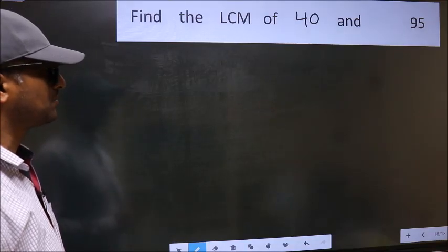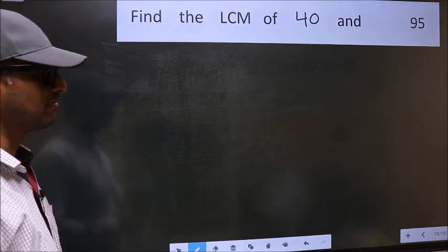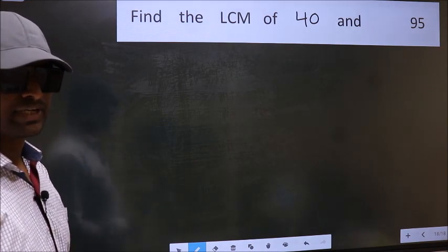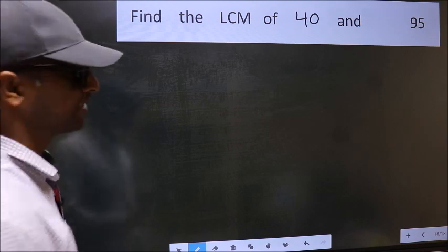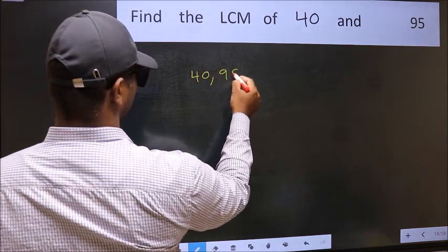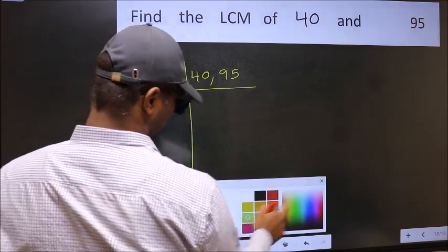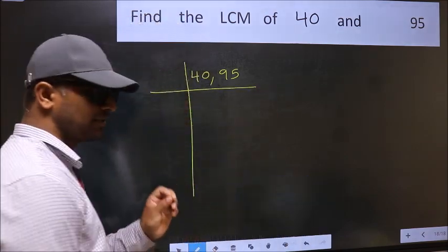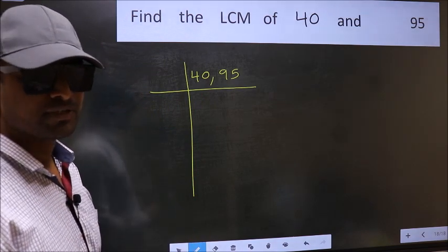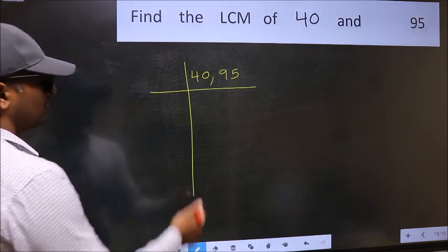Find the LCM of 40 and 95. To find the LCM, we should frame it in this way: 40 and 95. This is your step 1. Now you should focus on the first number, which is 40 here.